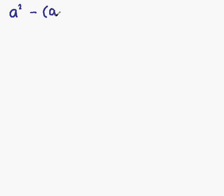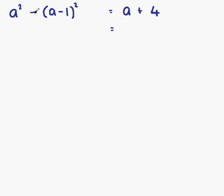In this example we have a squared minus a minus 1 all squared equals a plus 4, and we are asked to solve for a. The first thing we need to do is remove the brackets, taking special notice of the minus sign, which means minus 1 is multiplying at that point.